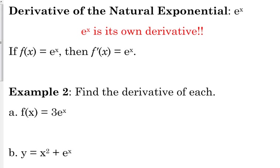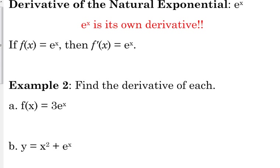I could go through the proof, but I'm not going to. All you need to know is e to the x is its own derivative. So if f of x is equal to e to the x, then f prime of x is equal to e to the x. It's a very simple function to take the derivative of, and we can apply all of our derivative rules just like we've been doing.